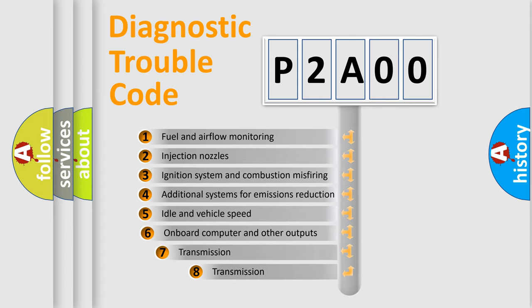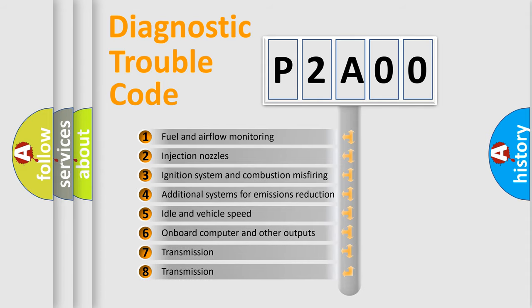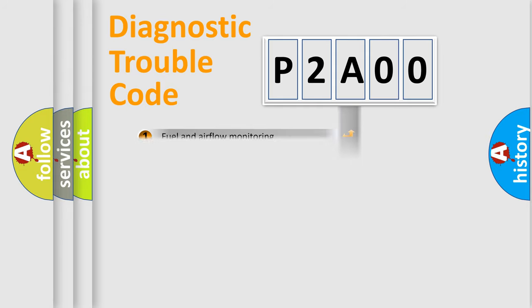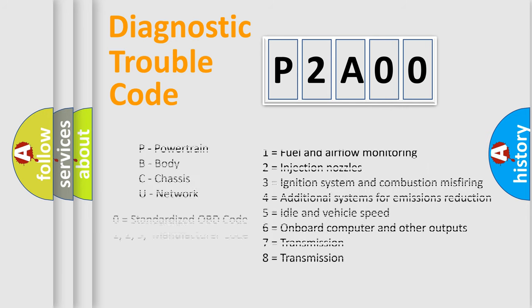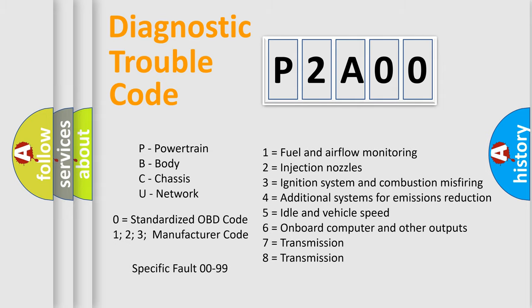The third character specifies a subset of errors. The distribution shown is valid only for the standardized DTC code. Only the last two characters define the specific fault of the group. Let's not forget that such a division is valid only if the second character code is expressed by the number zero.